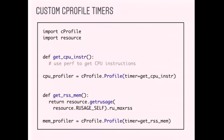An interesting thing about cProfile that I didn't learn until I went to Instagram: normally cProfile measures CPU time, but you can actually pass any function that returns a number into cProfile as the clock. We don't use the default cProfile timer at all. We use two different timers — one using perf to get CPU instructions, and another that measures RSS memory at the beginning and end of each function call. So you can use cProfile to measure anything, even if it's not time-related.